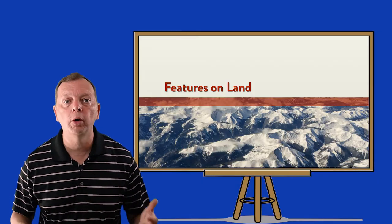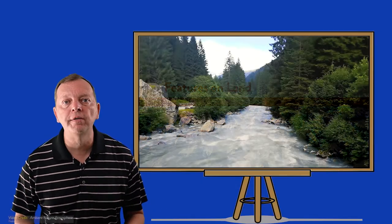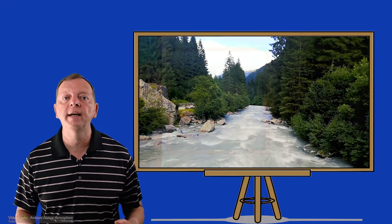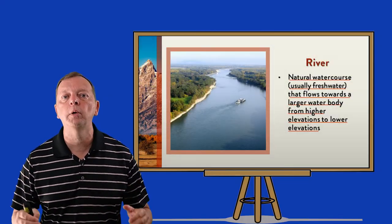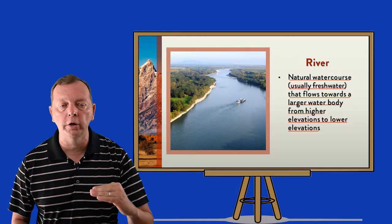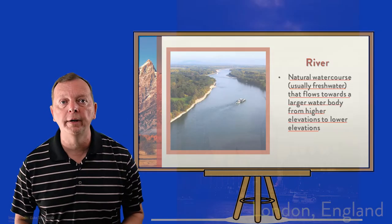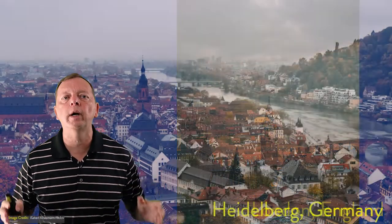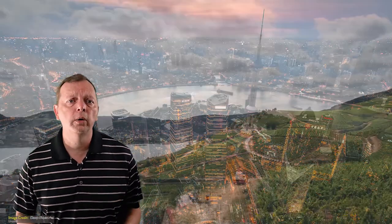But what happens when we start putting water into the mix? First of all, we have rivers, streams, and creeks. A river is defined as a natural flow of water from a high elevation to a lower elevation due to gravity. In this course we will find that rivers have been incredibly important to the settlement of cities. Rivers not only provide water and fertile soil, but they are also important to trade and transportation.